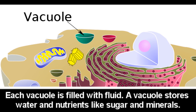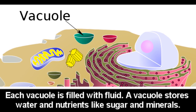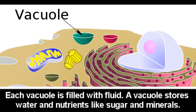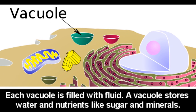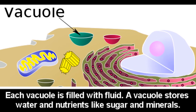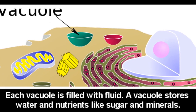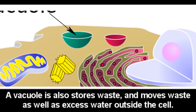Each vacuole is filled with fluid. A vacuole is used to store water and nutrients, such as sugar and minerals. A vacuole is also used to store waste and to move waste and excess water outside the cell.